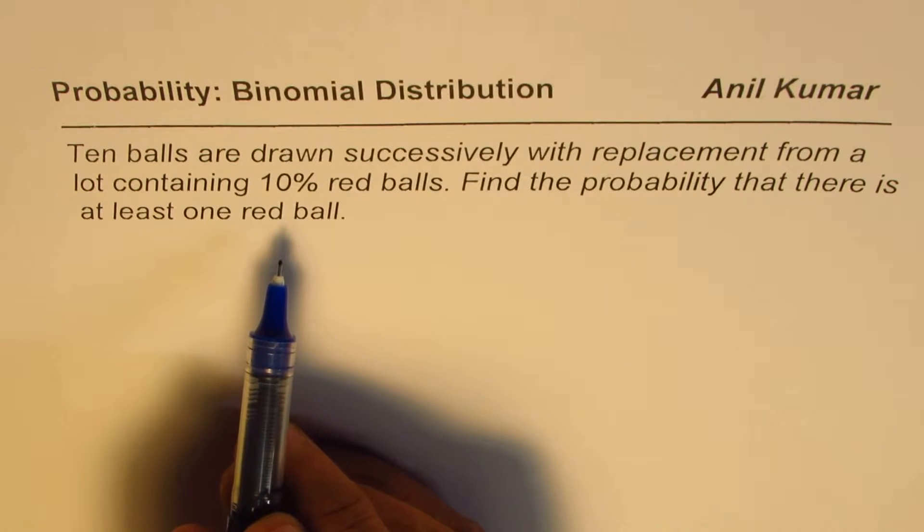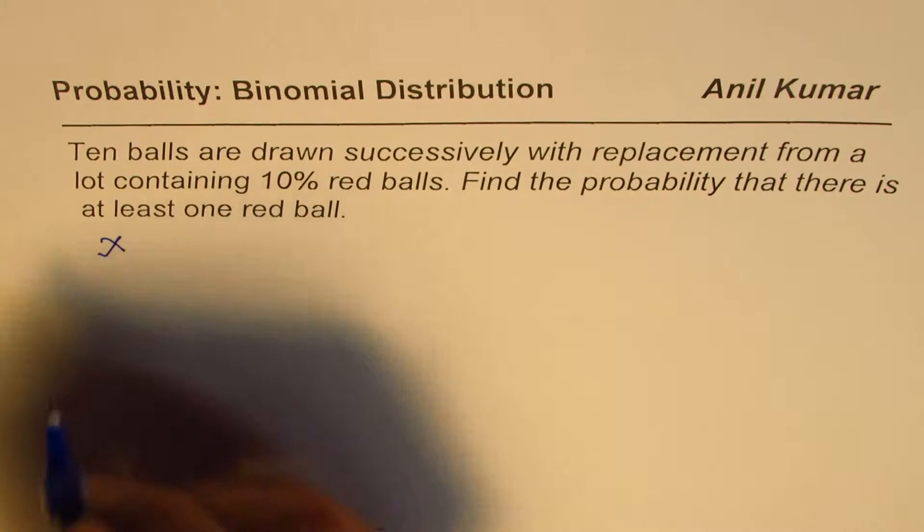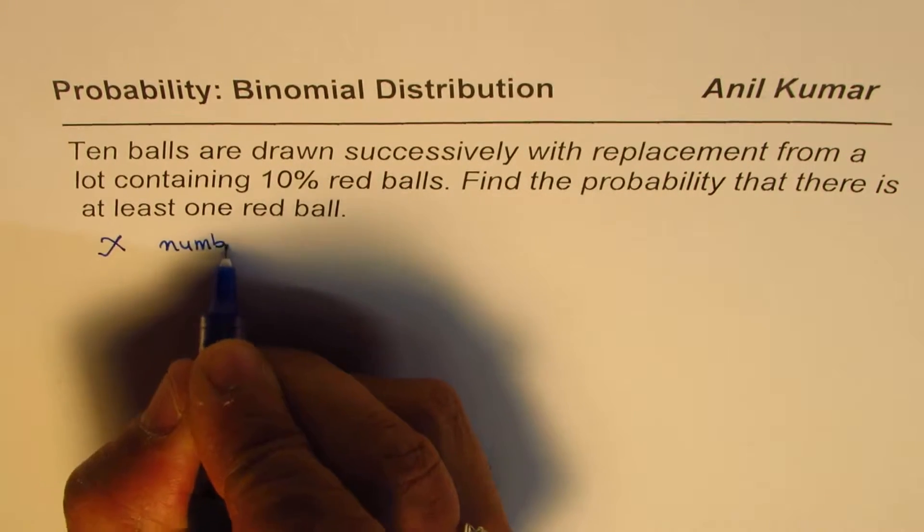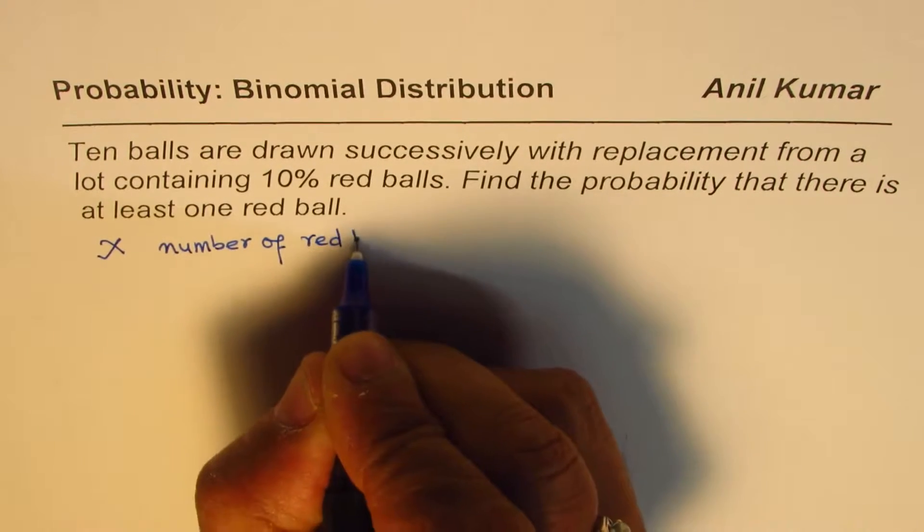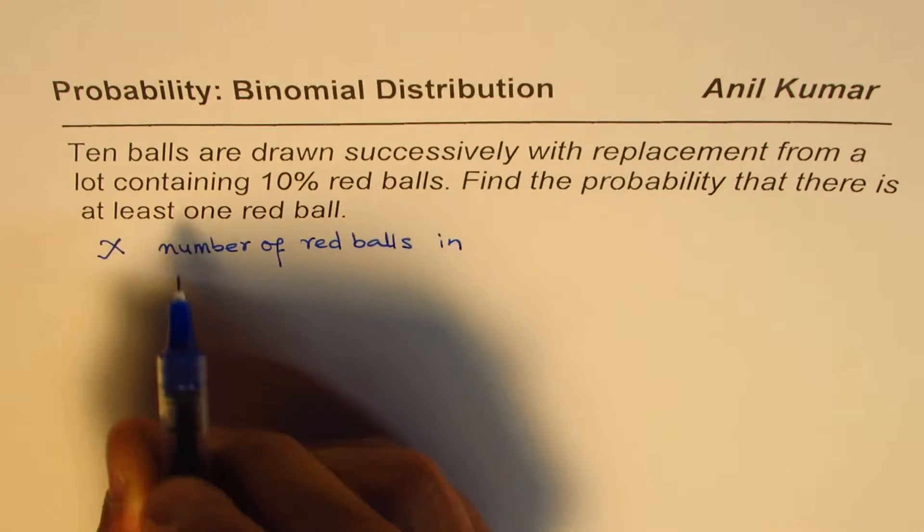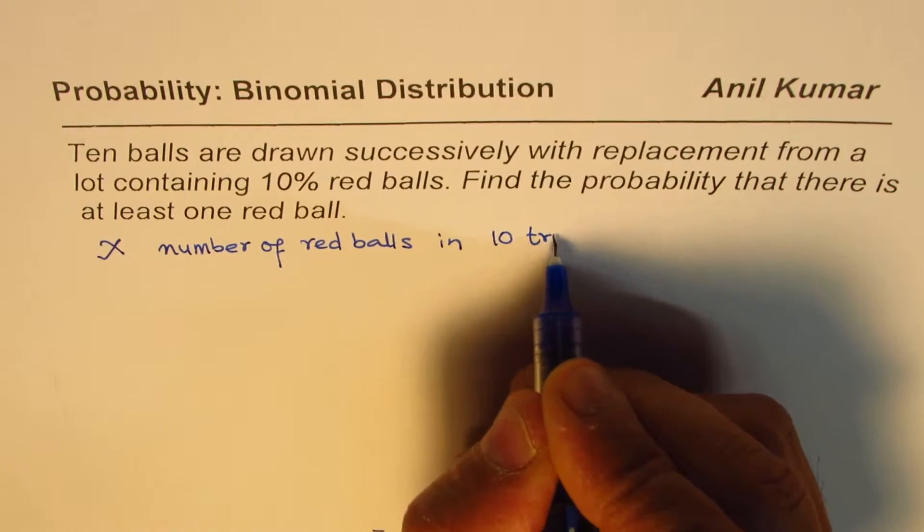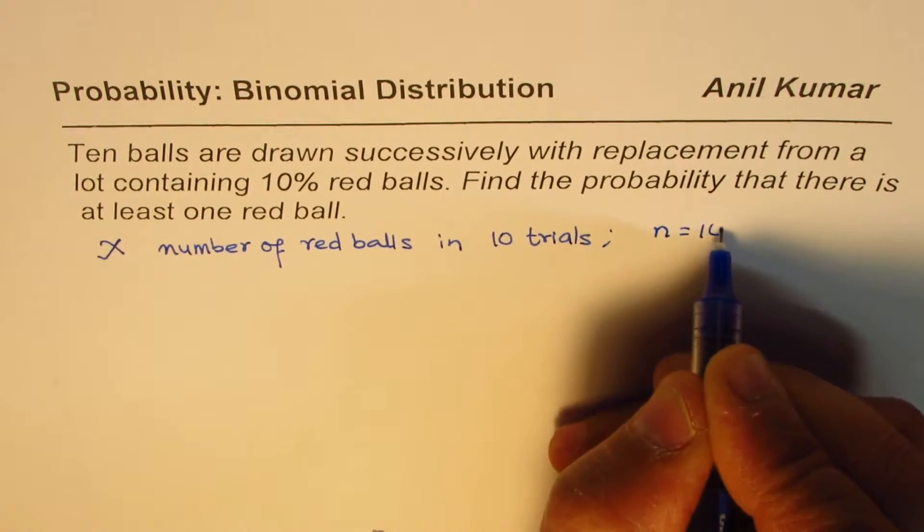So we can define a random variable as X, which will denote the number of red balls in how many trials? Ten trials. So we have n equals 10 in our case.